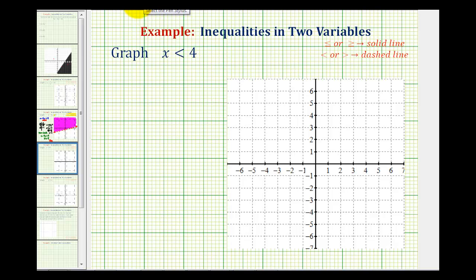So the first step is to graph the borderline, which will be the line x equals 4. But before we graph the borderline, we do have to check to see if it's going to be a solid line or a dashed line based upon the original inequality symbol here. Because it's less than, the line is going to be dashed.